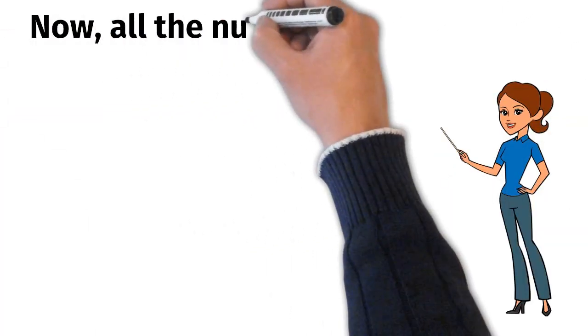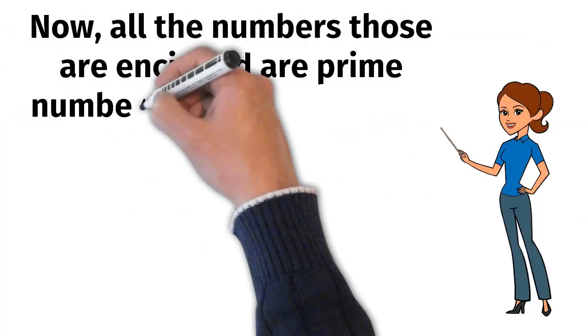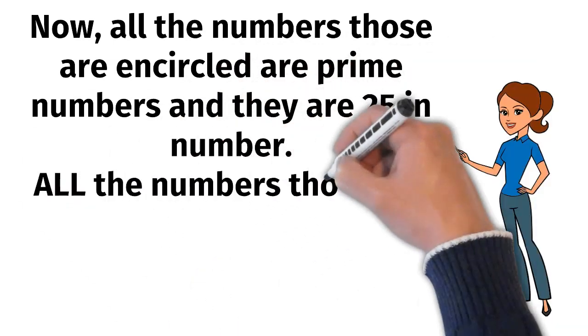Now, all the numbers that are encircled are prime numbers and they are 25 in number.